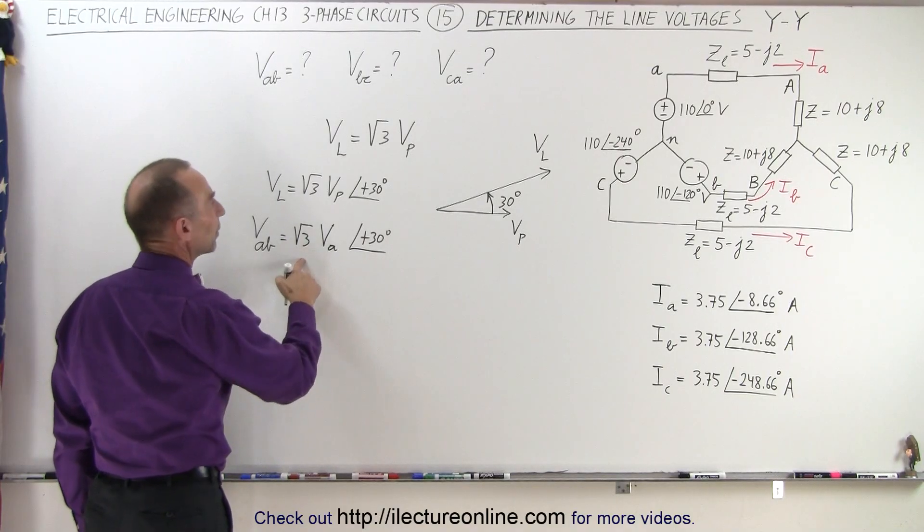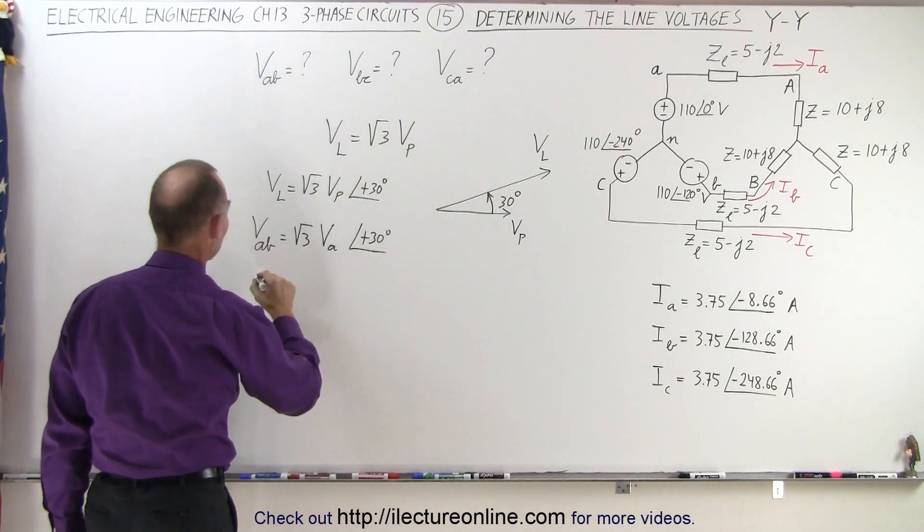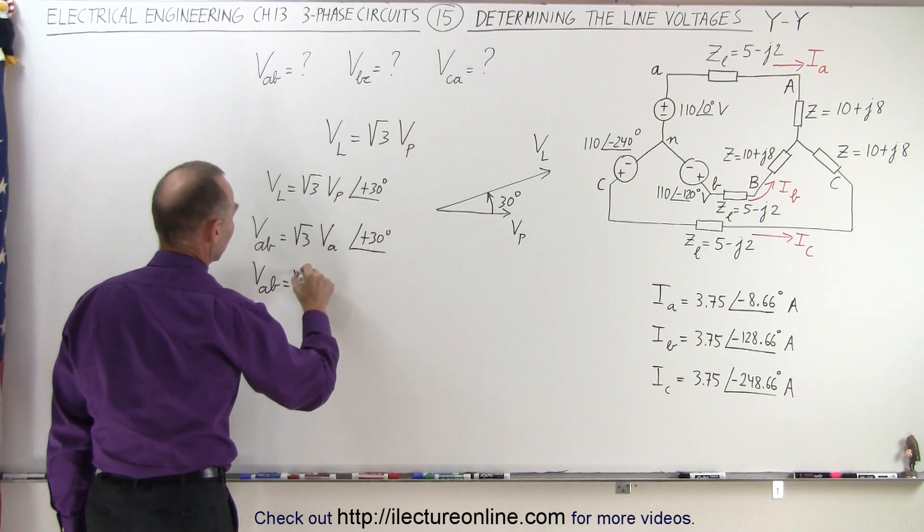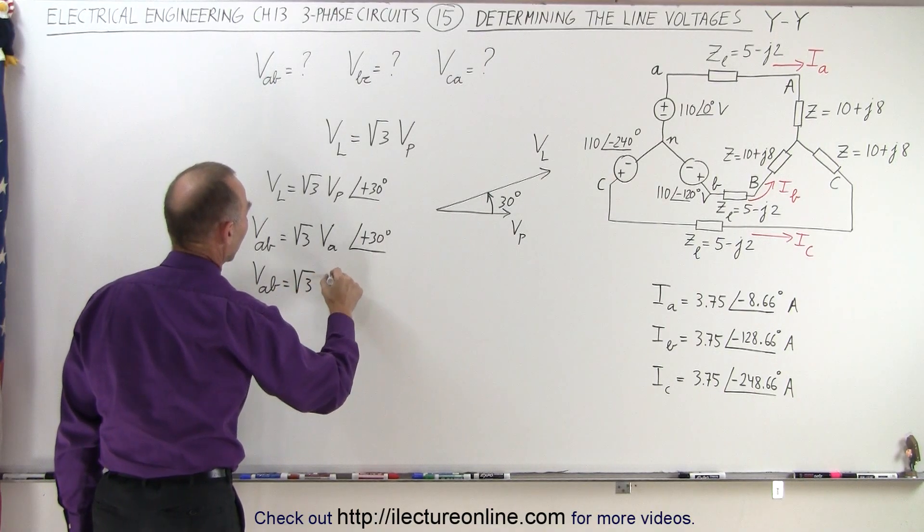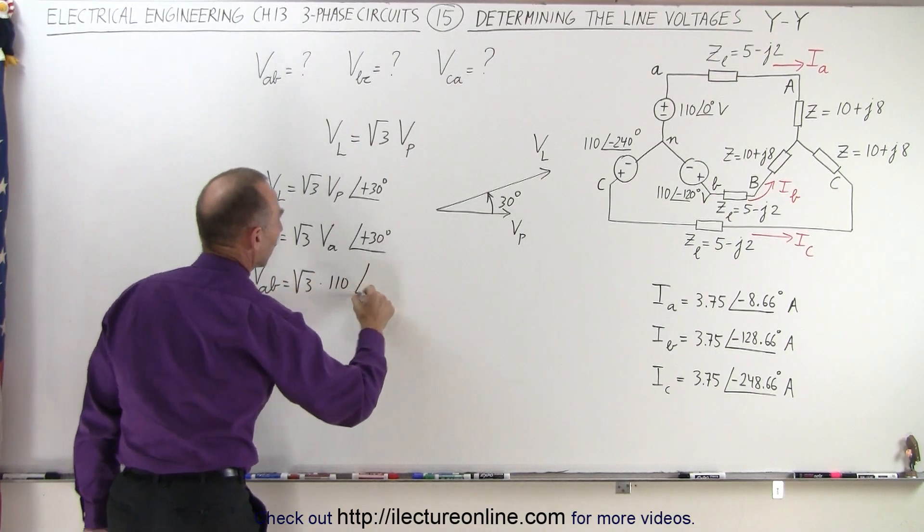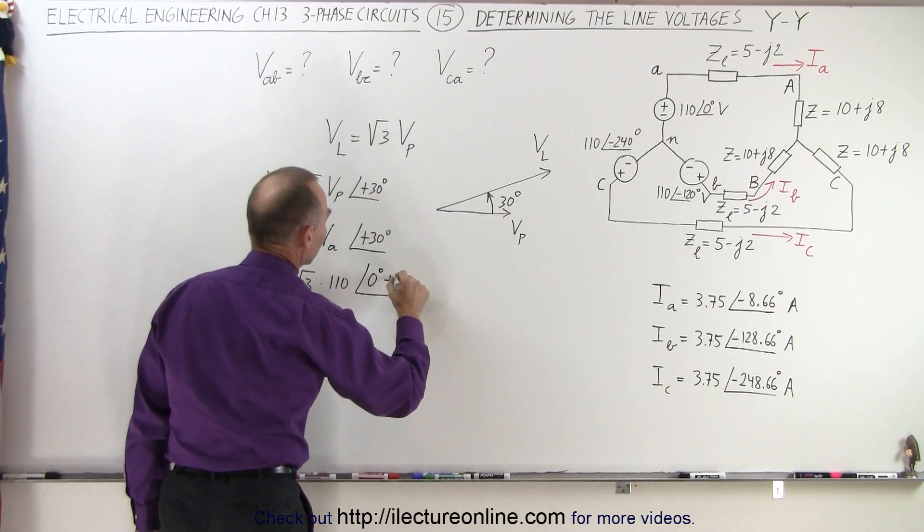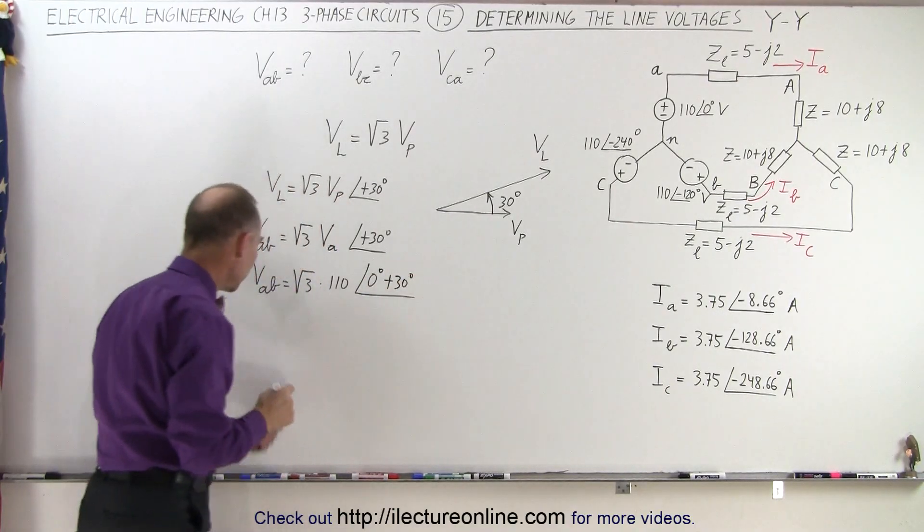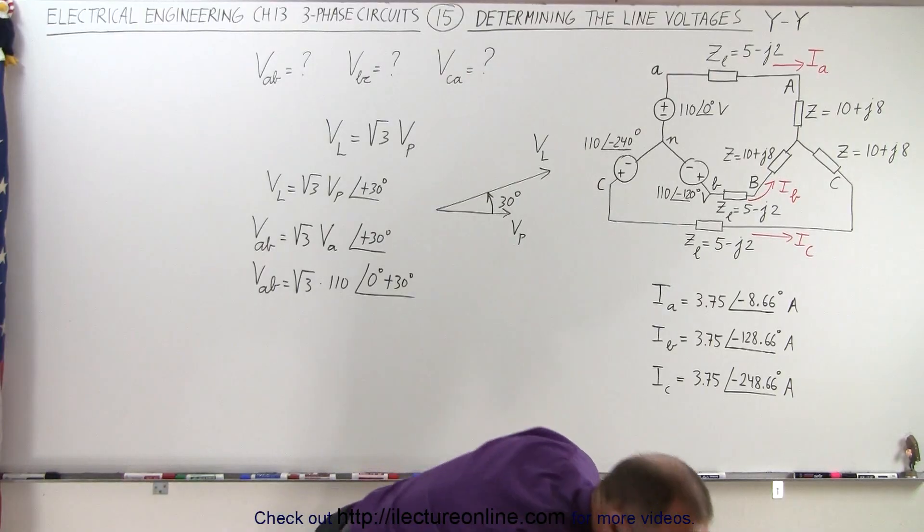And since we know what VA is, we can say that VAB therefore is equal to the square root of three times 110 volts. And we get zero degrees plus 30 degrees. And that will then be the line voltage from A to B.